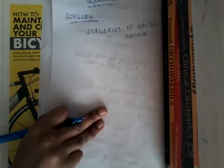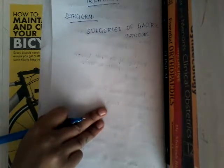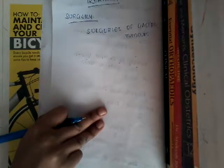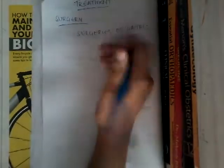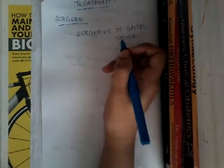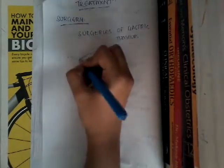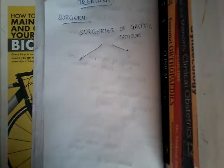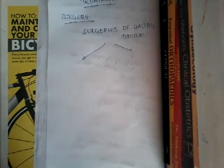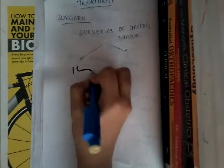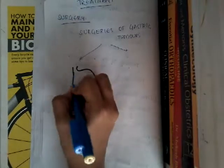It is an old edition, not a new edition. If there is any change in the new edition, please comment in the comment section. So let's go through the surgeries of gastric tumors. There are basically two types right now, according to Bailey and Love purely.